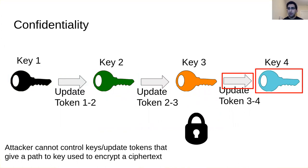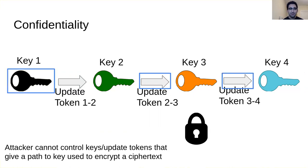In our setting it also works backwards: if an attacker knows key 4 and an update token from key 3 to key 4, they can re-encrypt the data to key 4 and use key 4 to decrypt. We can expect security when the attacker does not have such a path — for instance, if the attacker controls key 1 and some tokens but lacks the link to reach the encrypting key, we get semantic security for our ciphertext.